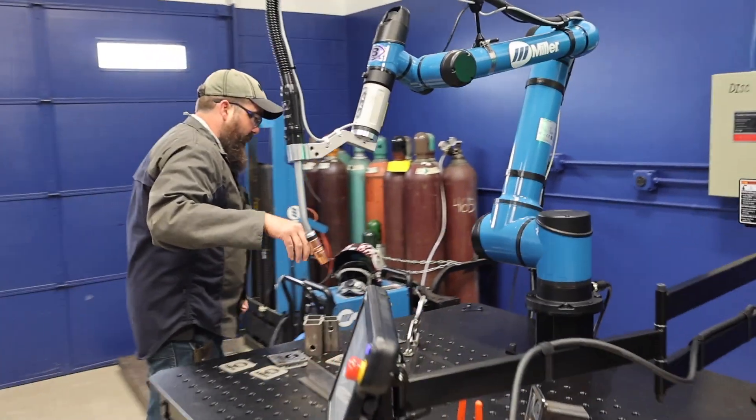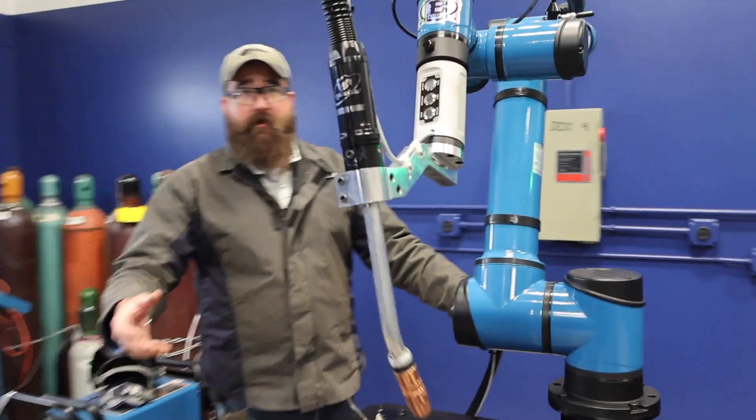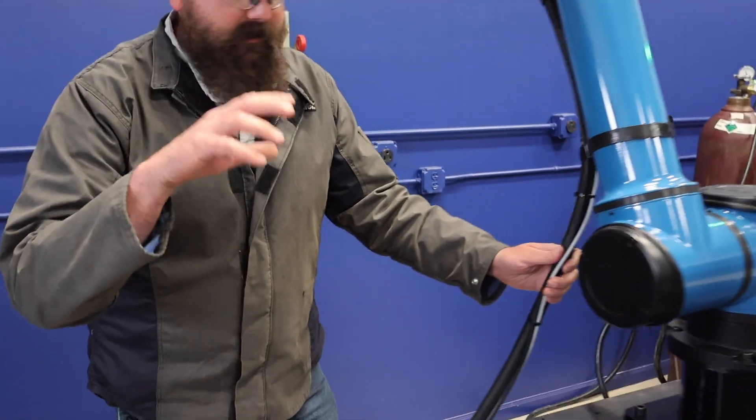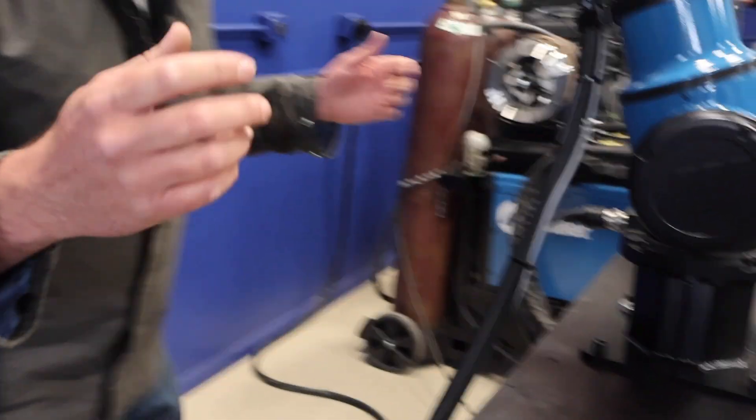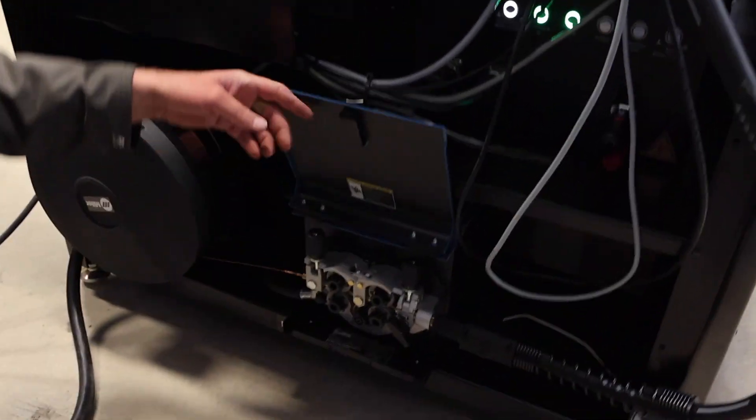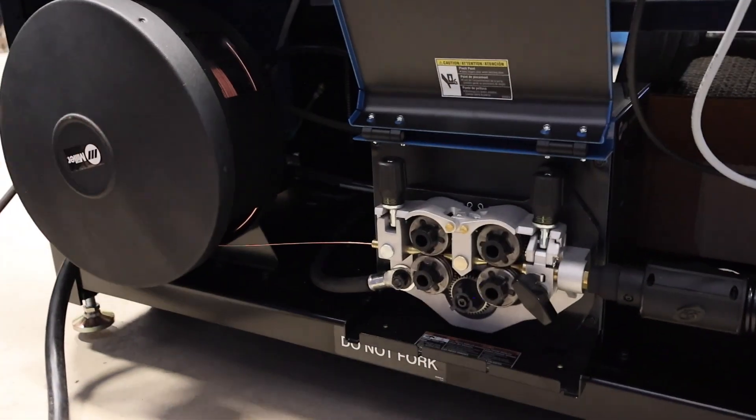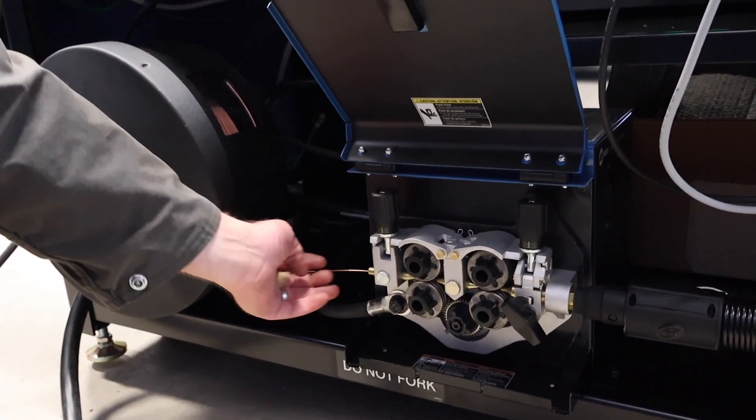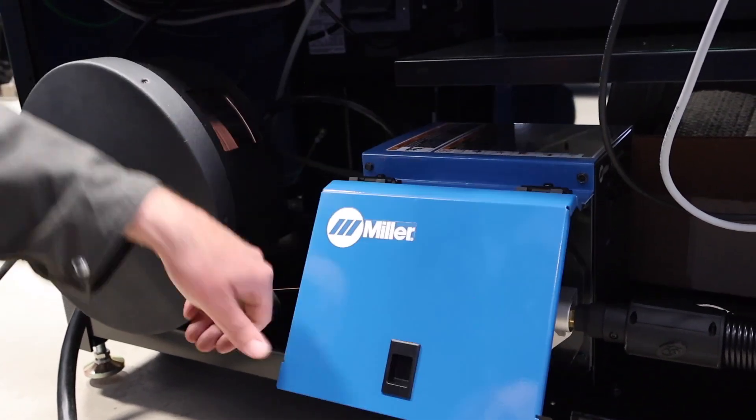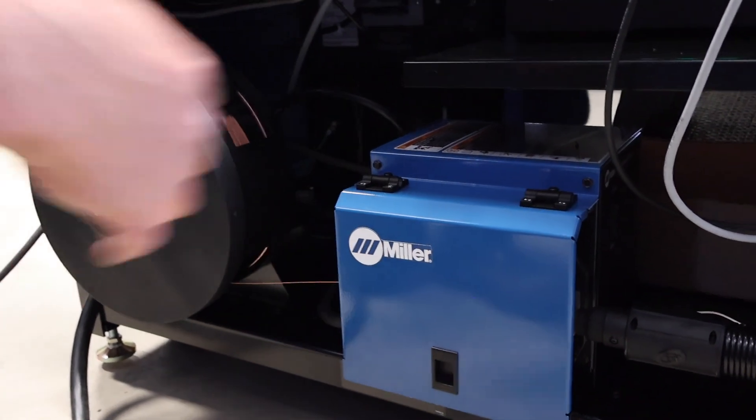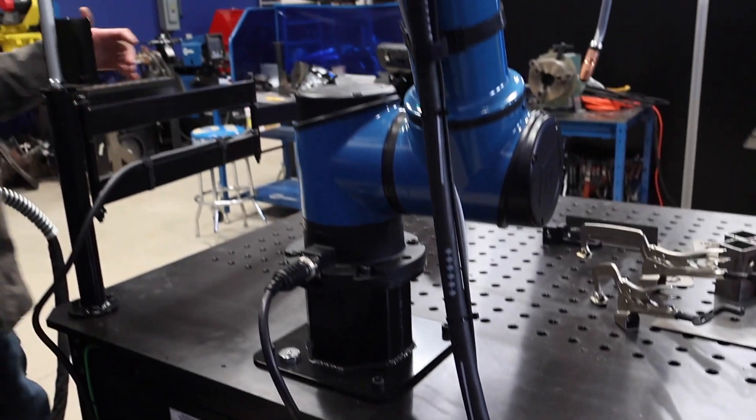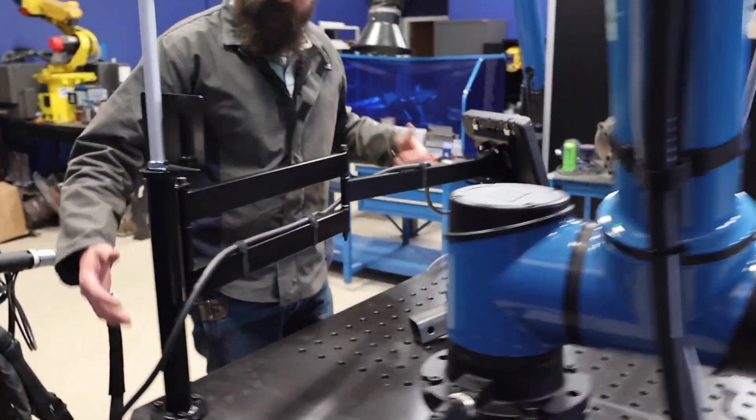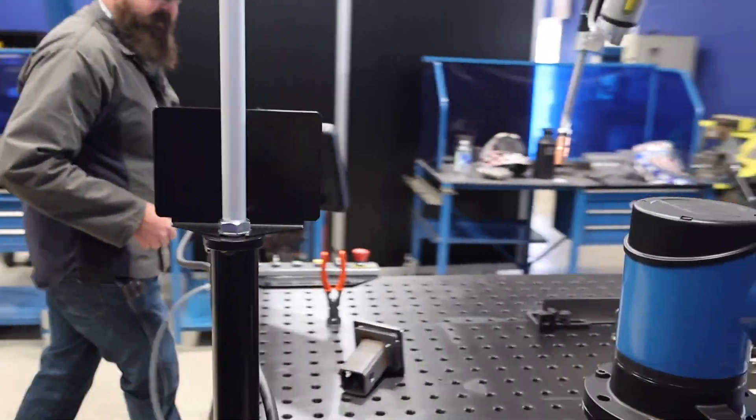Around the back, it comes with a 600 amp Tregaskiss torch with Accu-Lock R consumables, easily available. It has a 4 drive roll system wire feeder on the back and comes with a spool adapter. This is drum capable and you can put a drum on this. They sell the adapters for the back. It's a very small footprint for what this unit is.